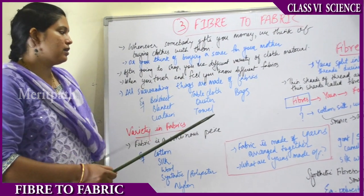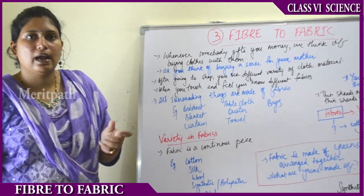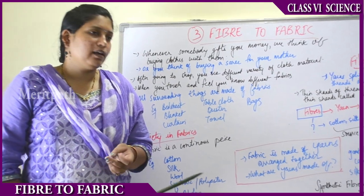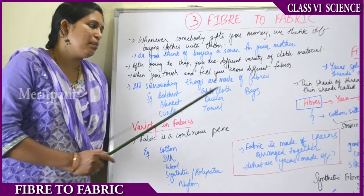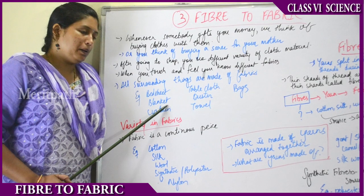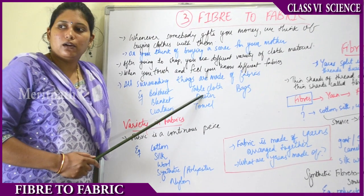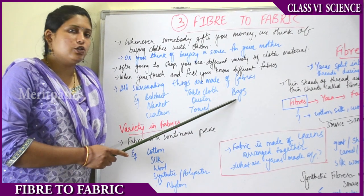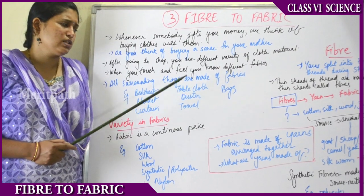We have to touch and feel the different fabrics to know what they are — whether it is a silk sari, a cotton sari, a Banarasi, or a Kanchipuram silk. Things around us are usually made up of fabrics: the bed sheet, bed cover, blankets, curtains, table cloth, school duster, towels, school bags, and gunny bags — all are made up of some type of fiber, either cotton or some other material.